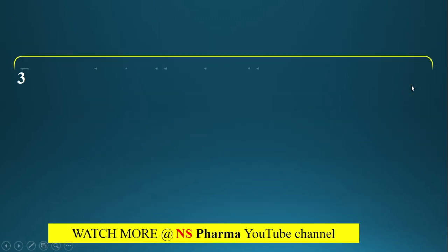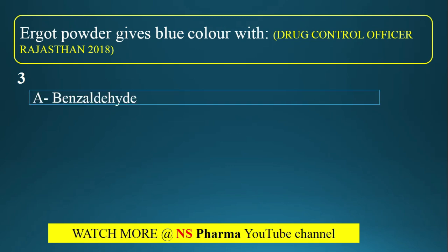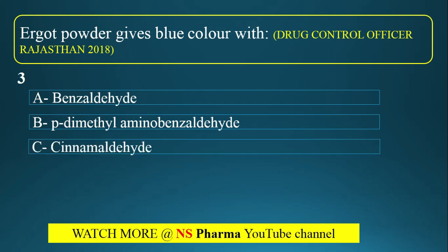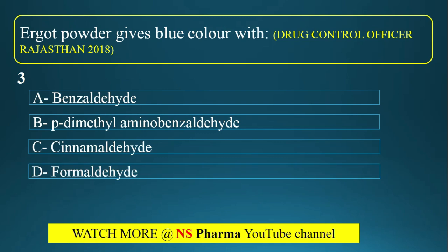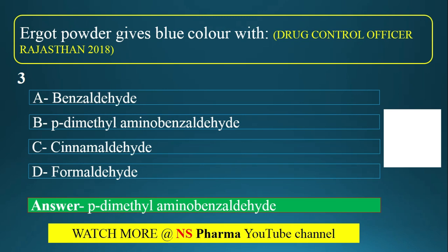Question number 3: Ergot powder gives a blue color with which of the following reagents? The options are: Option A benzaldehyde, Option B para-dimethylaminobenzaldehyde, Option C cinnamaldehyde, Option D formaldehyde. The correct answer is Option B — para-dimethylaminobenzaldehyde, shortly written as DMAB.